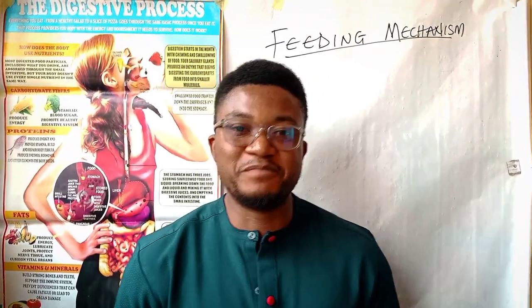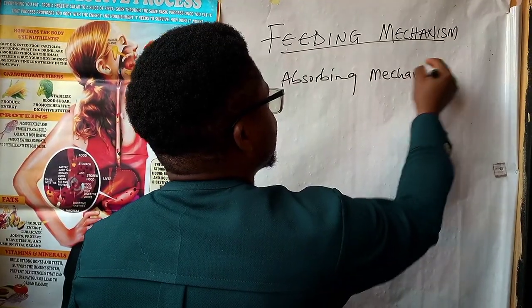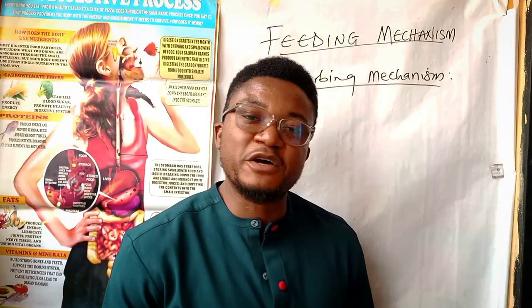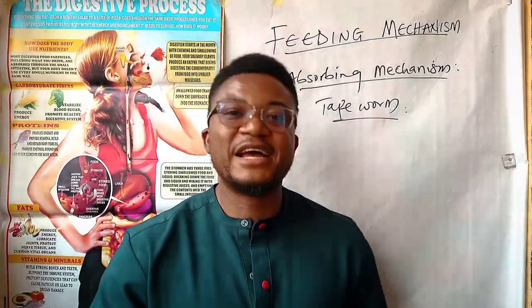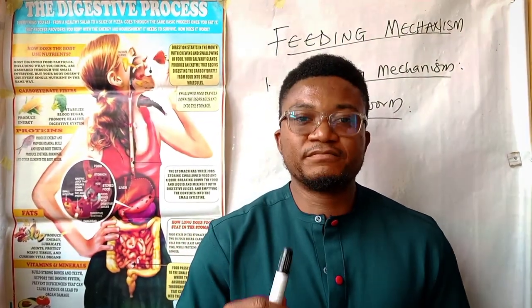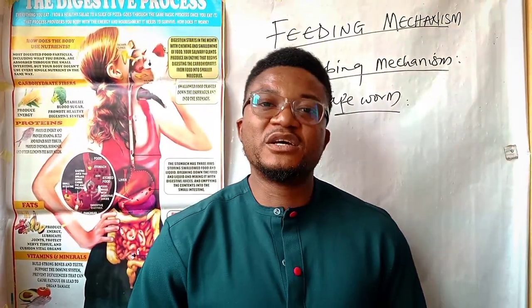Number one on the list is the absorbing mechanism, which is mostly related to organisms such as the tapeworm. The tapeworm is an endoparasite that lives in the host and feeds from the digested food of the host. The tapeworm does not have a distinct and well-defined alimentary tract; hence, by absorbing nutrients from the host, the tapeworm carries out its own digestive processes.